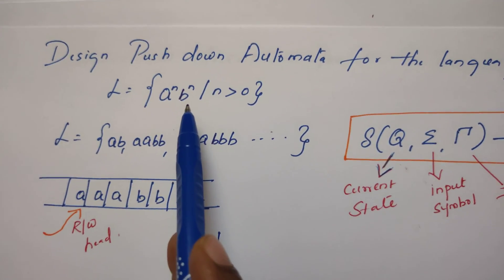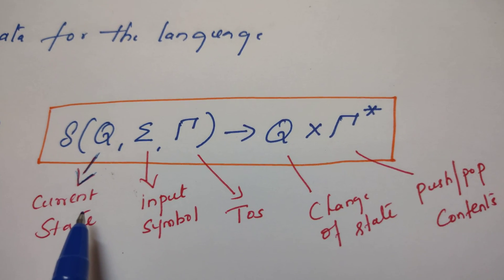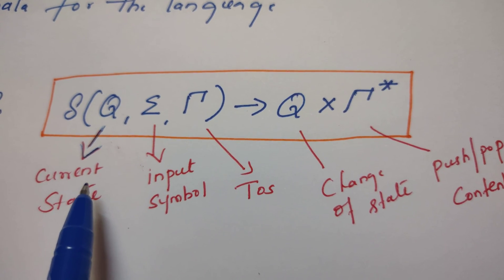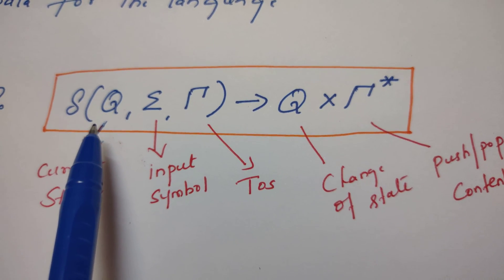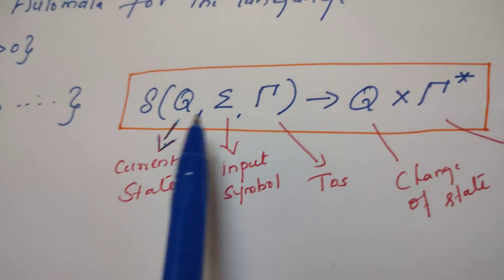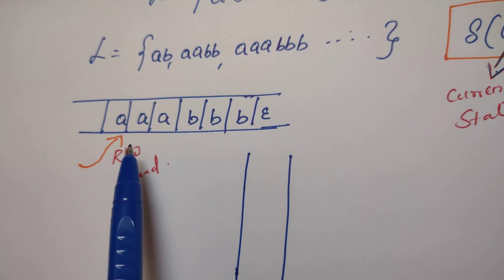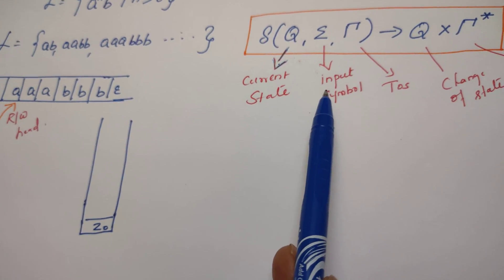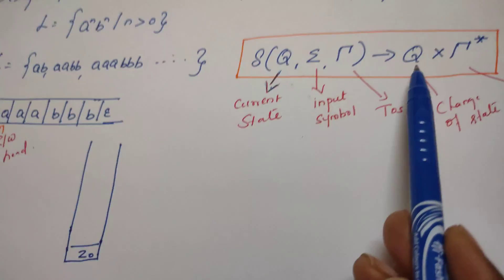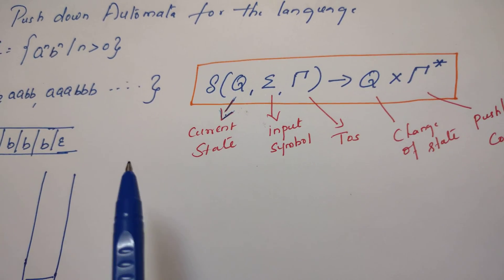Before designing the pushdown automata, let us recollect the transition function of pushdown automata. I have already discussed how pushdown automata works in my previous video — if you have any doubt please refer to those videos. The transition function goes like this: from the current state, on reading the input symbol, it checks what is available at the top of the stack. The PDA may then change its state by pushing or popping contents onto the stack.